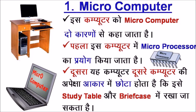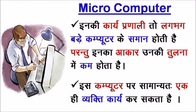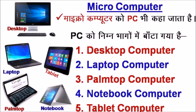पहला है Micro Computer — इस Computer को Micro Computer दो कारणों से कहा जाता है। पहला, इस Computer में Micro Processor का प्रयोग किया जाता है। दूसरा, यह Computer दूसरे Computer की अपेक्षा आकार में छोटा होता है, इसे Study Table और Brief Case में रखा जा सकता है। इनकी कार्य प्रणाली तो लगभग बड़े Computer के समान होती है, परन्तु इनका आकार उनकी तुलना में कम होता है। इस Computer पर सामान्यतः एक ही व्यक्ति कार्य कर सकता है। Micro Computer को PC यानि Personal Computer कहा जाता है, जिसे निम्न भागों में बाँटा गया है: Desktop Computer, Laptop Computer, Palm Top Computer, Notebook Computer और Tablet Computer।